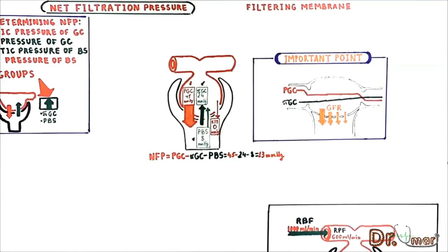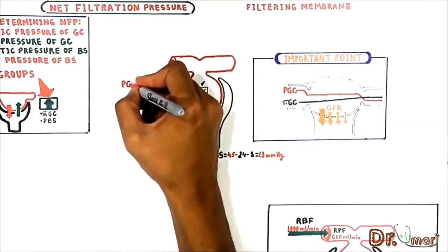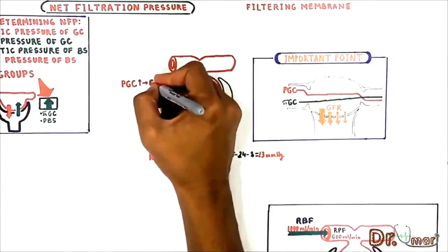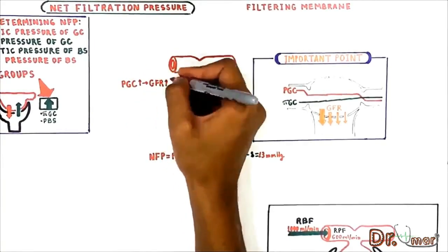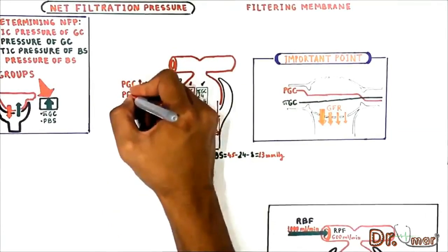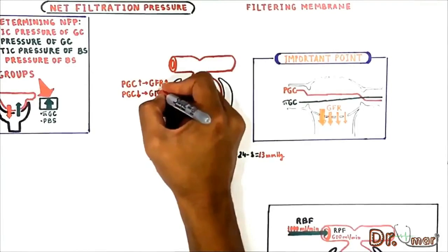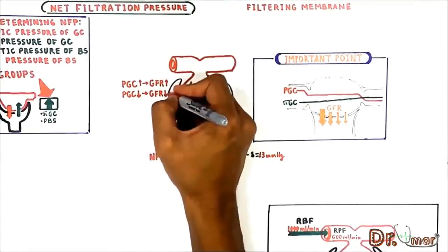To sum it up, GFR mainly depends on hydrostatic pressure in glomerular capillaries. Thus, increasing the glomerular hydrostatic pressure increases GFR, and decreasing the glomerular hydrostatic pressure decreases GFR.